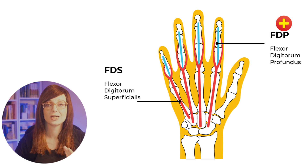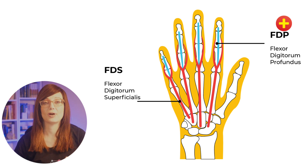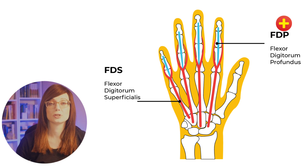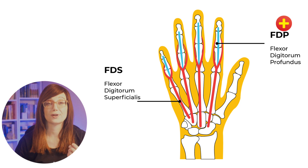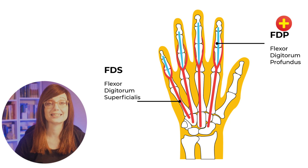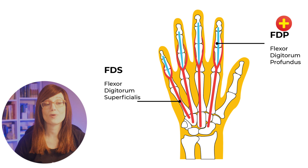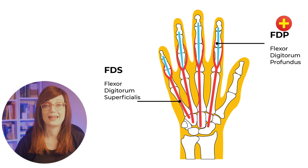The flexor digitorum profundus — think 'profound' like deep — arises from the deep layer of the flexor muscles. The flexor pollicis longus of the thumb also rises from the deep muscle layer. The flexor digitorum superficialis is a continuation of the more superficial layer. The digitorum profundus inserts at the base of the distal phalanx and flexes the distal interphalangeal joint. The flexor digitorum superficialis tendon divides into two slips that wrap around the FDP to insert into the sides of the middle phalanx, and this FDS flexes the PIP joint.